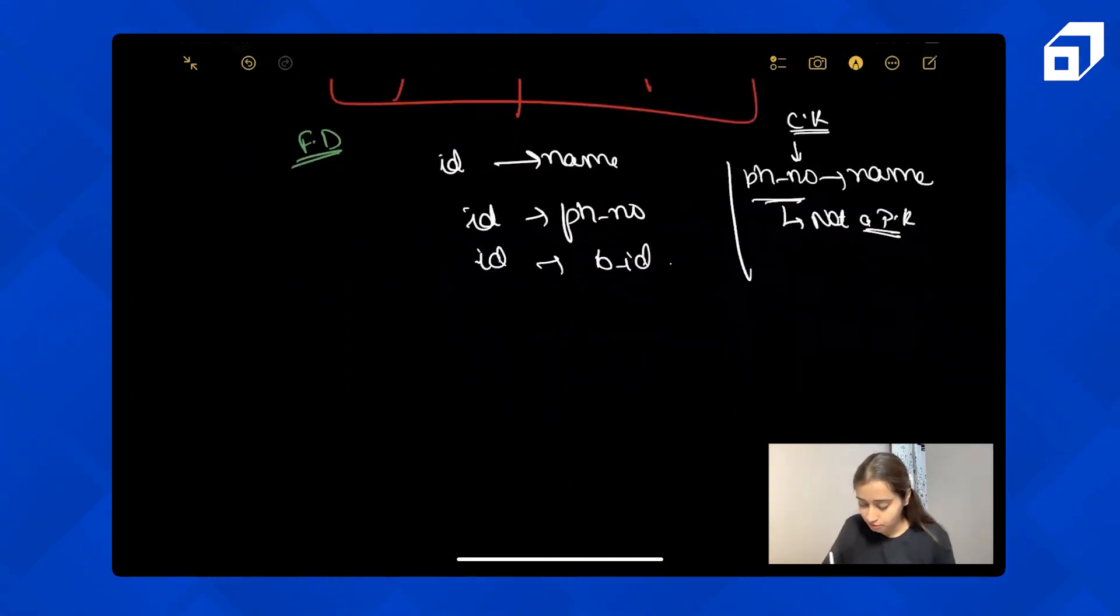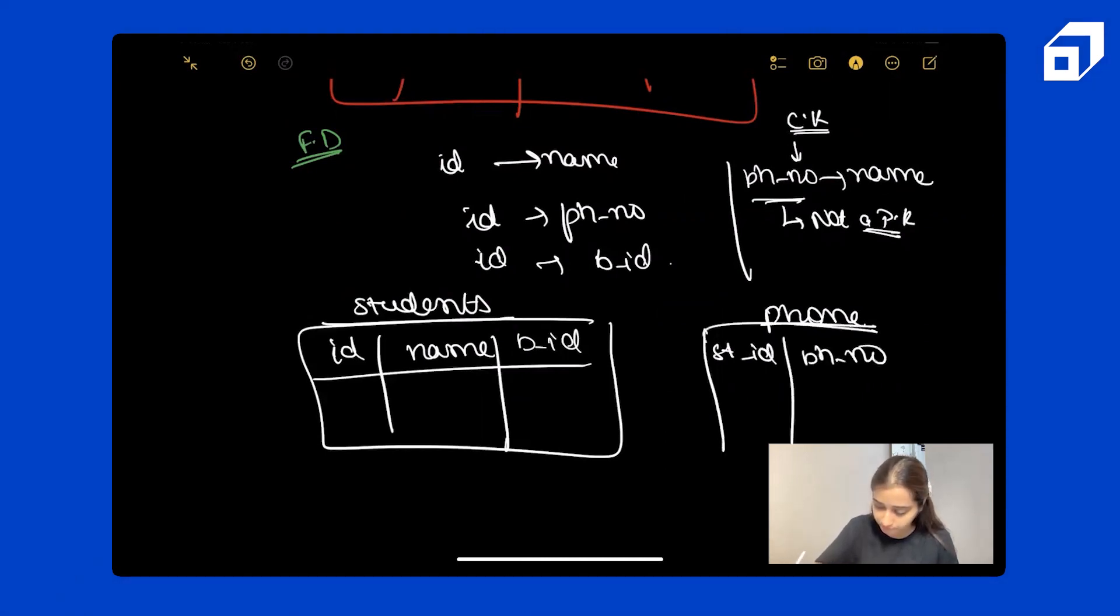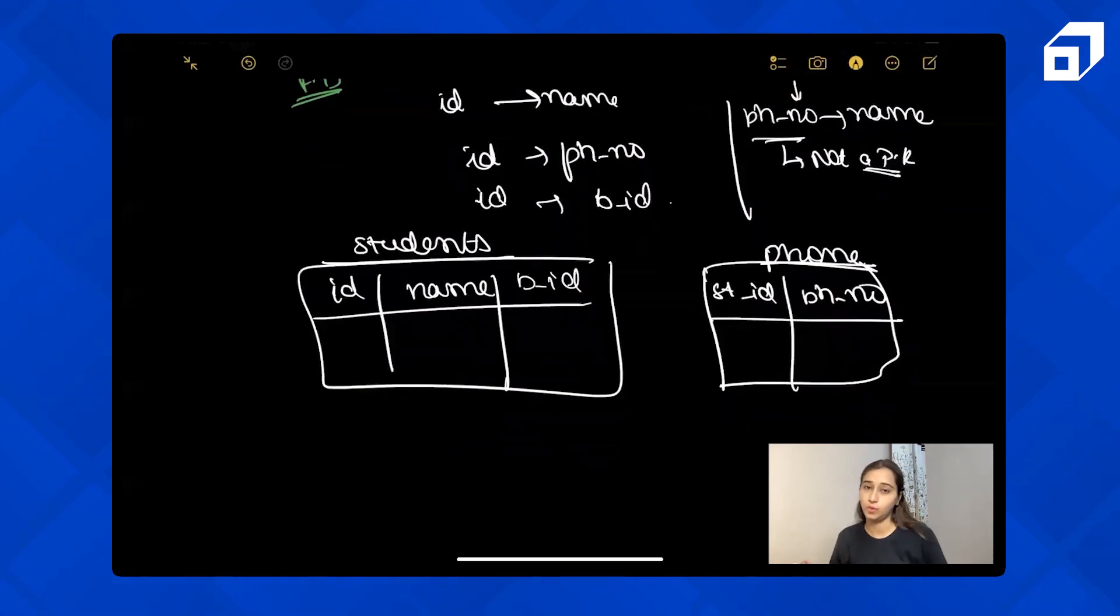Let's just normalize this. So one table we can have for students: their ID, their name, and their batch ID. One table for the phone number. In that, we can have the student ID and we can have their phone number.